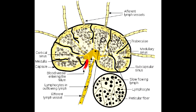We're going to start off talking about the capsule. The lymph node is an encapsulated organ, so you see the capsule. Right underneath that is the subcapsular sinus. You also see many of the afferent lymphatics and one or more of the efferent lymphatics.